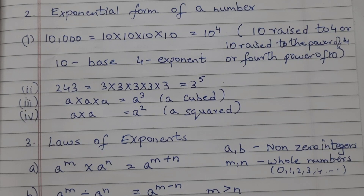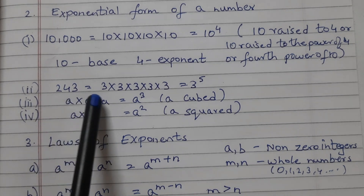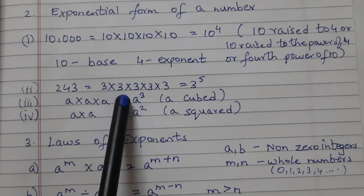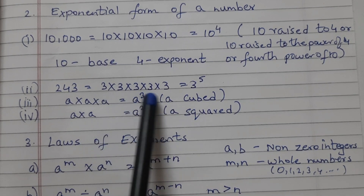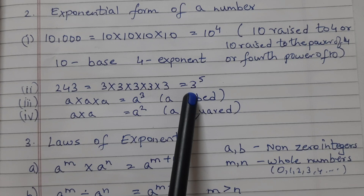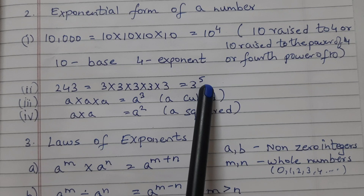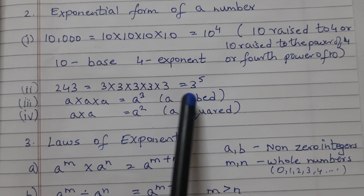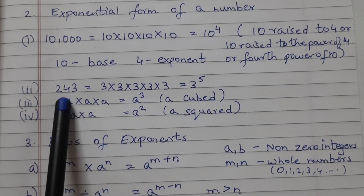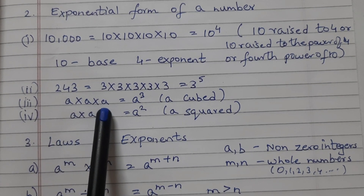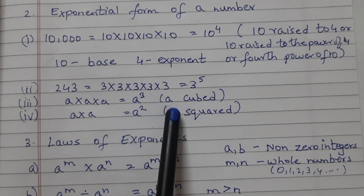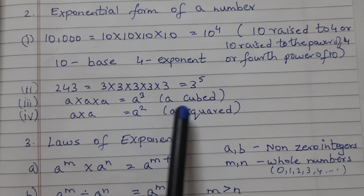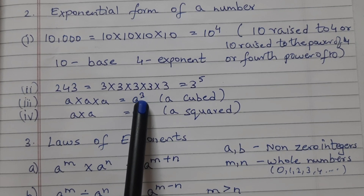Let's see a few more examples. 243 can be written as 3 into 3 into 3 into 3 into 3, so 3 is multiplied 5 times, which can be written as 3 raised to the power of 5. 3 is the base, 5 is the exponent, and this is the exponential form of 243. Similarly, a into a into a is a raised to the power of 3, or we can read it as a cubed. Whenever the exponent is 3, we can read it as cubed.